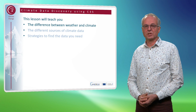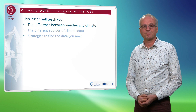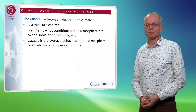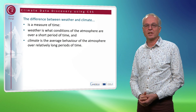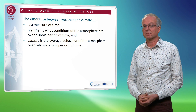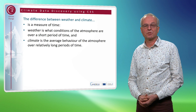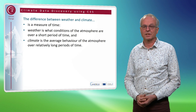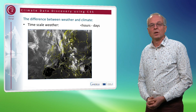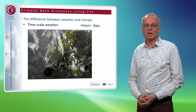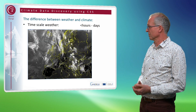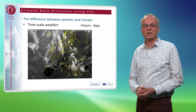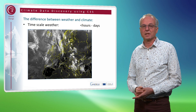Let's now start with the difference between weather and climate. The difference between weather and climate is a measure of time. Weather is what conditions of the atmosphere are over a short period of time, while climate is the average behavior of the atmosphere over relatively long periods of time. Weather is what you typically experience when you are outdoors, or a snapshot of the atmosphere like you see in this picture. It varies over timescales from hours up to a few days.